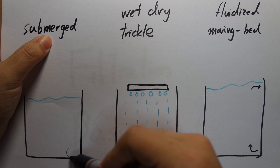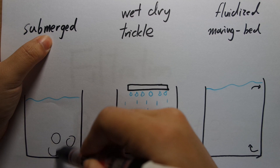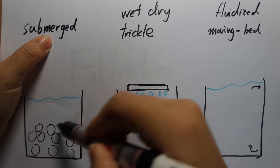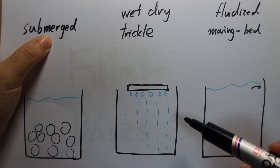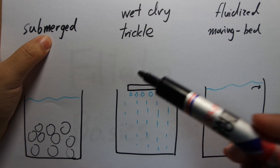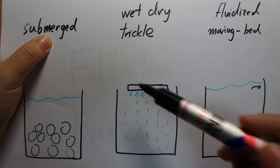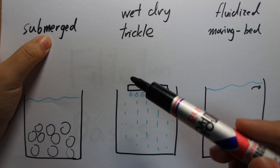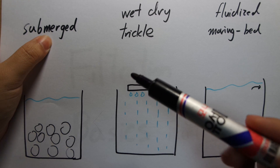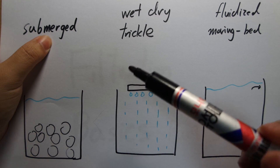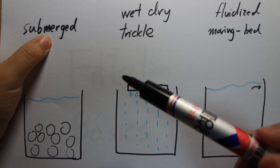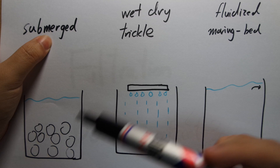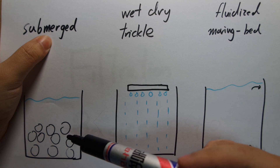Submerged basically means whatever media you have, it is all submerged inside water. The vast majority of filters will be in the submerged type — under gravel filters, canister filters, sump filters, hang-on-back filters — pretty much all filters will have the media submerged within the water.